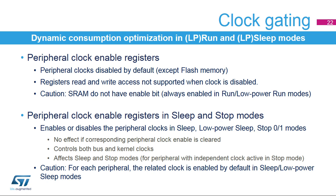The dynamic power consumption can be optimized by using peripheral clock gating. Each peripheral clock can be gated on or off in run and low-power run modes. By default, the peripheral's clock is disabled, except the flash memory clock, which is enabled by default. When a peripheral's clock is disabled, the peripheral's registers cannot be read or written. Other registers allow for configuring the peripheral's clock during stop, sleep, and low-power sleep modes. By default, no active peripheral clock is gated in stop, sleep, and low-power sleep modes. When a peripheral is not needed, its clock enable bit should be cleared to reduce power consumption.